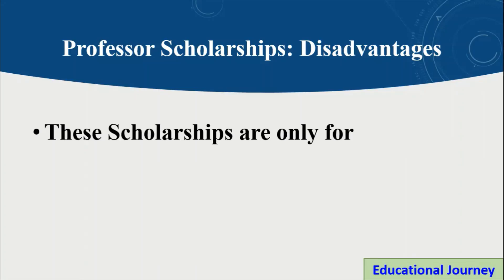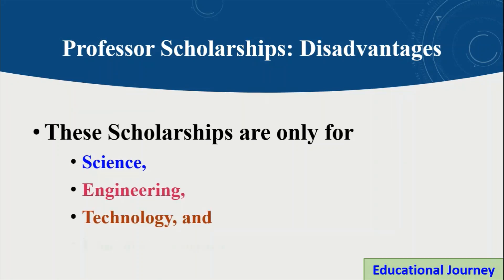The disadvantages: this scholarship is only for Masters and PhD, so undergraduate students cannot apply. Also, this scholarship is only available for specific fields — mainly science, engineering, technology, and pharmacy. Within science: chemistry, biology, mathematics, and other departments. In engineering: all engineering fields. In technology: computer science and other departments, as well as biotechnology. If you are from these fields, you can easily apply and get this scholarship.